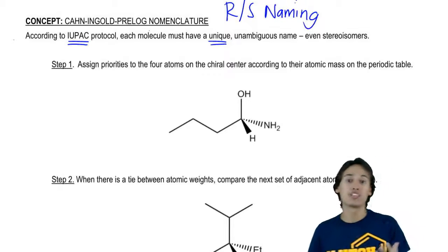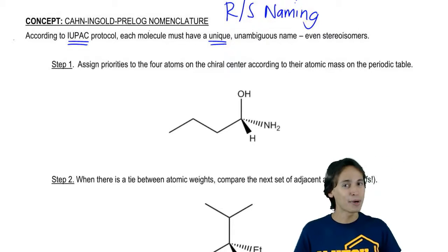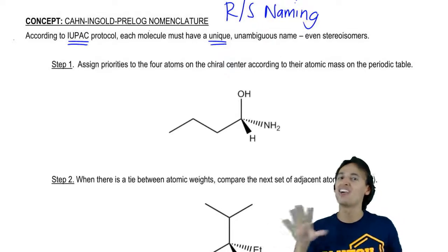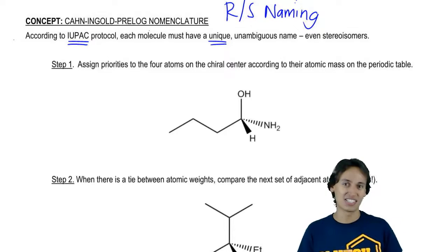You'll understand why it's called R and S in a second. But for right now, just take my word for it that you don't need to say Cahn-Ingold-Prelog in class. You could just say R and S and everyone will know what you're talking about.